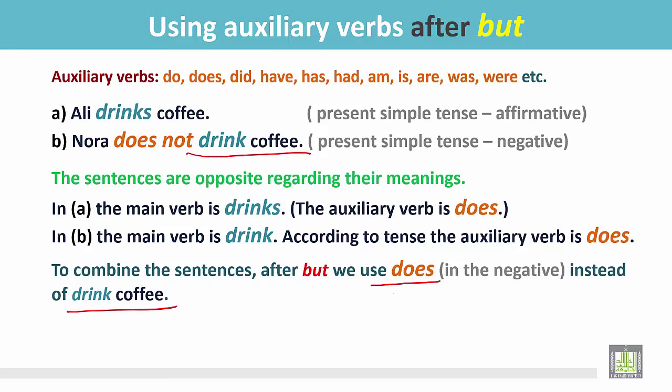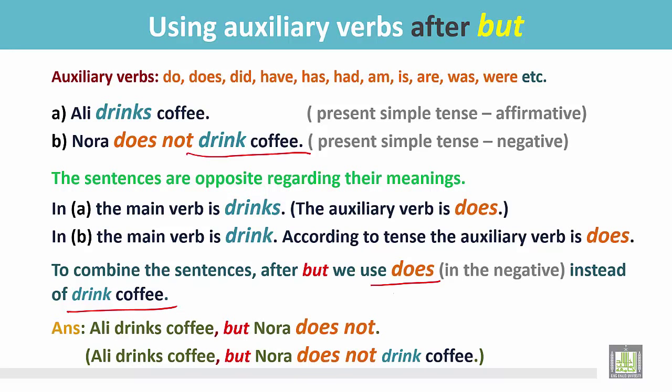We do not write 'drink coffee' after we join by 'but'. The answer: 'Ali drinks coffee, but Nora does not.' We do not write the full sentence 'Ali drinks coffee, but Nora does not drink coffee.' Just put a full stop after 'Nora does not'.